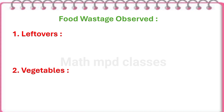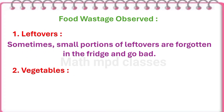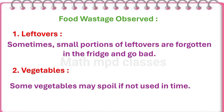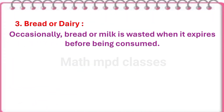Food wastage observed. First, leftovers: sometimes small portions of leftovers are forgotten in the fridge and go bad. Second, vegetables: some vegetables may spoil if not used in time. Third, bread and dairy: occasionally, bread or milk is wasted when it expires before being consumed.